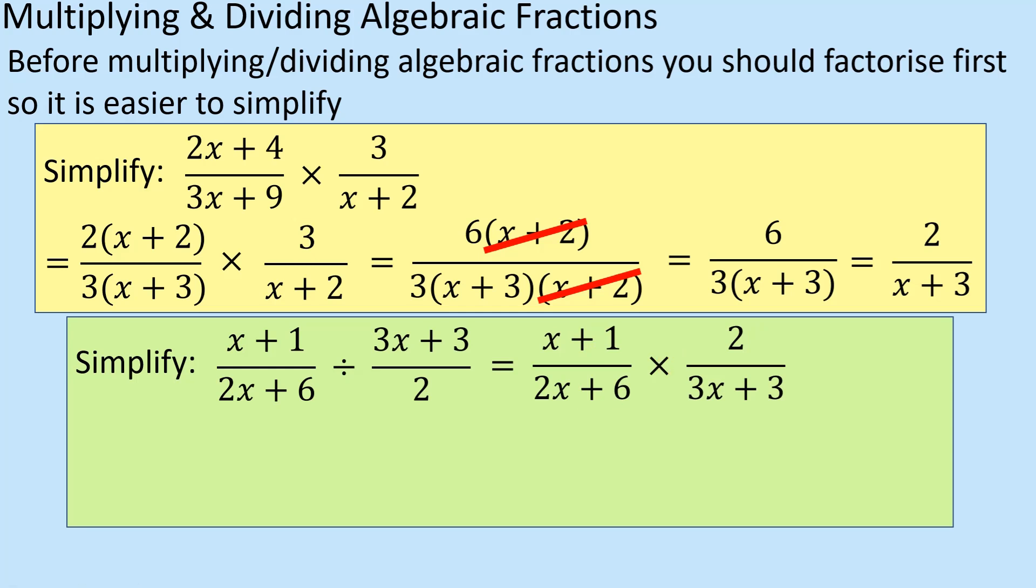Right, thinking about what we did last time, we looked at, rather than just times the top two times the bottom two, to make our life easier, we're going to look at if there's anything that factorizes. Well, the x + 1 doesn't factorize, and neither does the 2, but the two denominators both factorize. Okay, I can see that those are both even numbers, and I can see that those are both divisible by 3. So that's what I'm going to do next. Okay, so the x + 1 stays as it is, and then this denominator both divide by 2. So the 2 goes on the outside, and then an x + 3. Okay, that bracket.